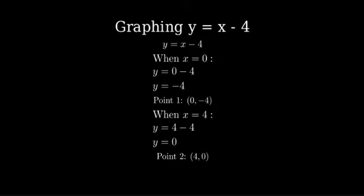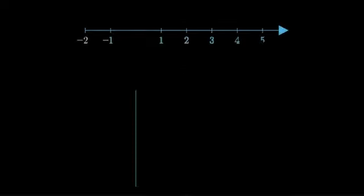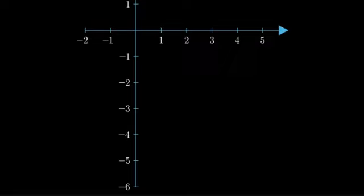Now that we have two points, let's plot them on a coordinate plane. Let's set up our coordinate system. We'll make the x-axis go from negative two to positive six and the y-axis from negative six to positive two to make sure we can see both of our points clearly.